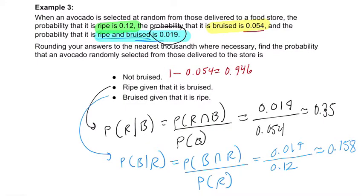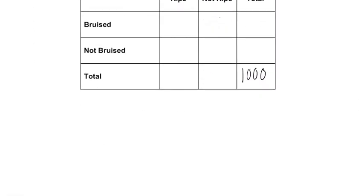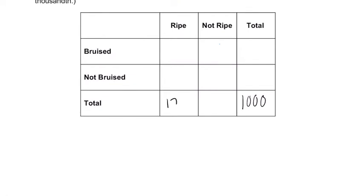So probability that it's ripe is 12%. So in total, there should be 120 ripe avocados, 12% of 1,000.